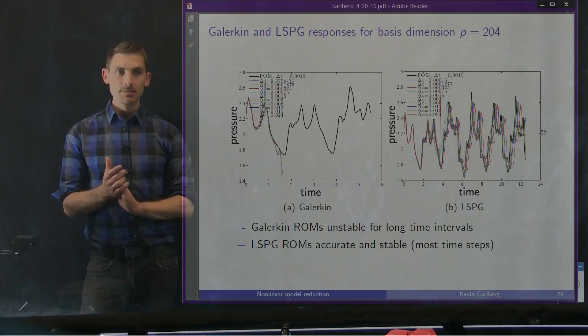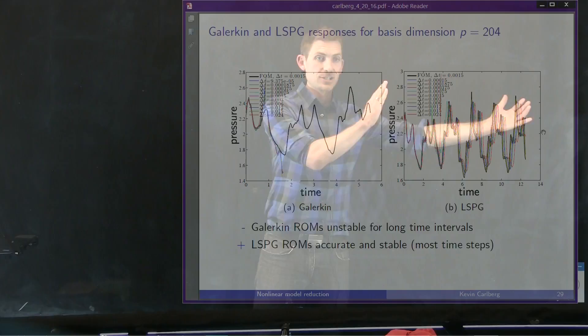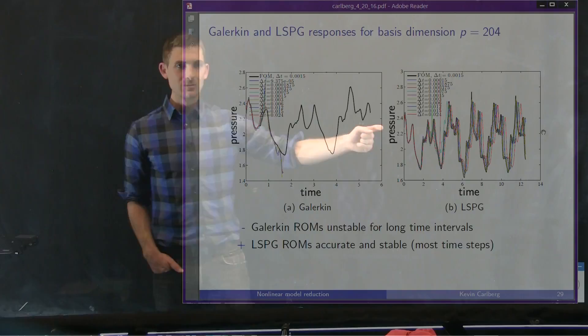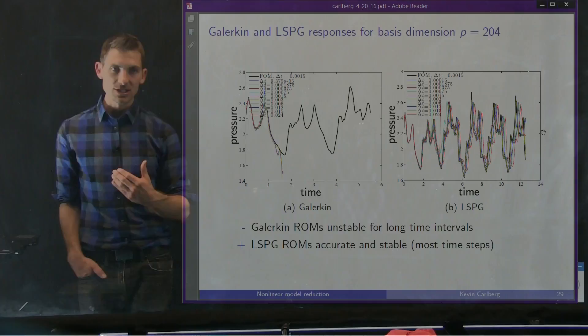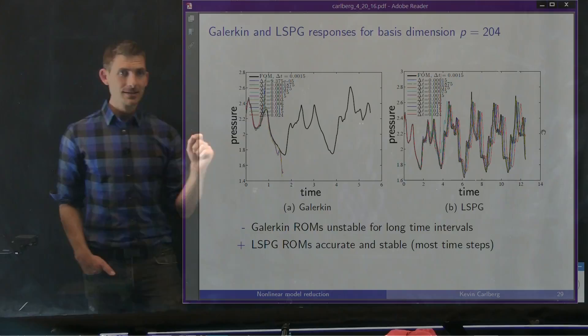Here are the LSPG ROM and old Galerkin results using a fixed basis dimension for different time steps. Using the exact same POD basis but switching from Galerkin to LSPG projection, we see right away that the Galerkin ROM was unstable for long time intervals while the LSPG ROM is accurate and stable for almost all time steps. This is a nice result because we haven't changed the basis at all — only the projection. Interestingly, the LSPG models that do go unstable correspond to very small time steps, because we know that LSPG equals Galerkin in those cases.